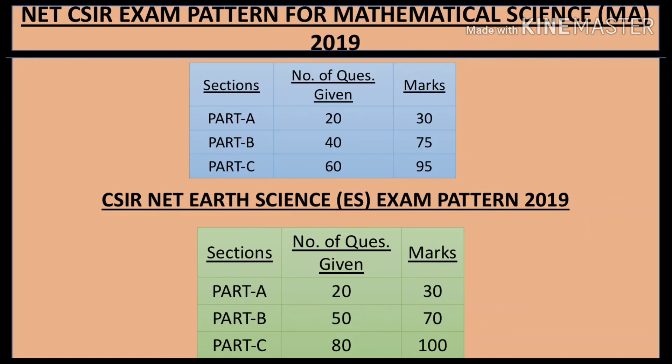For the Earth Sciences exam pattern, there are 3 sections. Part A has 20 questions, Part B has 50 questions, and Part C has 80 questions. Part A carries 30 marks. The number of questions and marks differ across subjects — Part A marks remain the same across subjects, but Part B and Part C have varying question counts and marks depending on the subject.